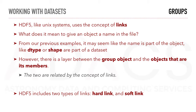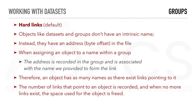HDF5, just like Unix systems, uses the concept of links. It may seem that an object's name is part of the object itself, but there is a layer between the group object and its members — the two are related by links. HDF5 includes two types: hard links and soft links. With hard links, objects like datasets and groups don't have a name; instead they have an address, a byte offset, in the file. When assigning an object to a name within a group, the address is recorded and associated with the name to form the link. An object has as many names as there are links pointing to it, and when no links remain, the space used by the object is freed.